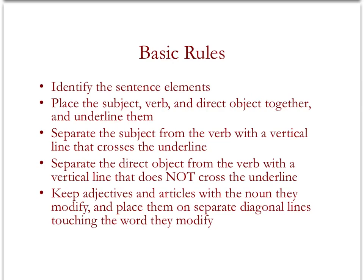The first rule is that you want to identify the elements of the sentence. Go back to the previous videos if you need a review of identifying sentence elements. Your next step is that you'll place the subject, verb, and direct object together in that order and underline them. You'll then separate the subject from the verb with a vertical line that crosses through the underline. Next, you'll separate the direct object from the verb with a vertical line that does not cross the underline. This distinction is important. You want to keep adjectives and articles with the noun they modify and place them on separate diagonal lines touching the word they modify. In other words, if words are a unit in the sentence, they need to be a unit in the diagram.